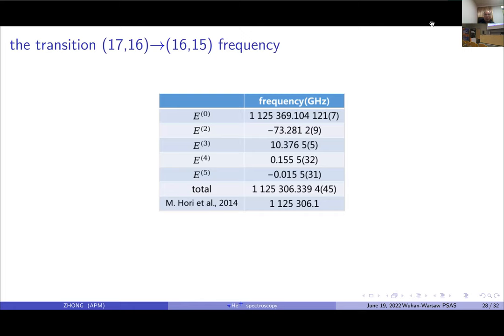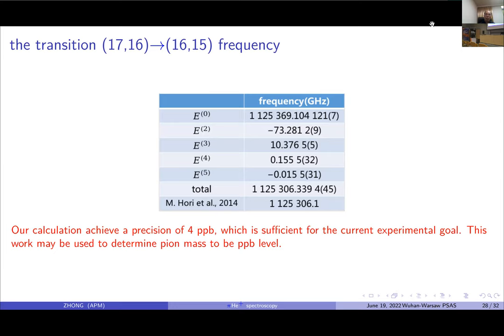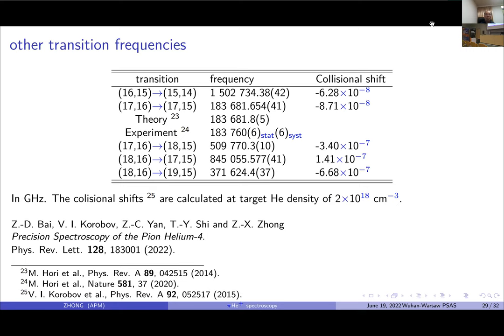Here is the transition results if we sum all of the corrections. Our calculations achieve a precision of 4 PPB, which is sufficient for the current experimental goal. This will lead to a pion mass to about PPM level. Here is our result for other transitions in gigahertz units.